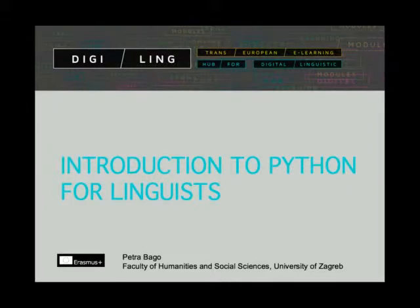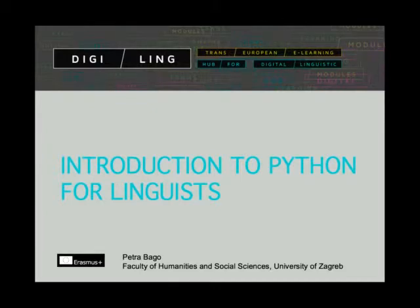We don't assume you have ever written a line of code. At the end of this course, you will be able to process a text document with Python, write a basic tokenizer, and calculate the frequency distribution of characters or tokens found in a text. These are the very basics covered in this course Introduction to Python for Linguists.